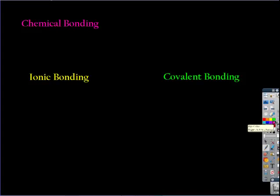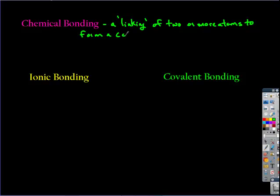A chemical bond forms, which we're going to just sort of say a linking—we'll put that in quotes because it's not always true—of two or more atoms to form a compound. So a compound is made up of more than one atom, it's when atoms come together.